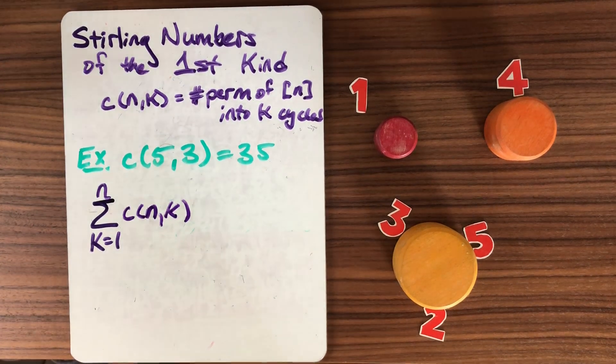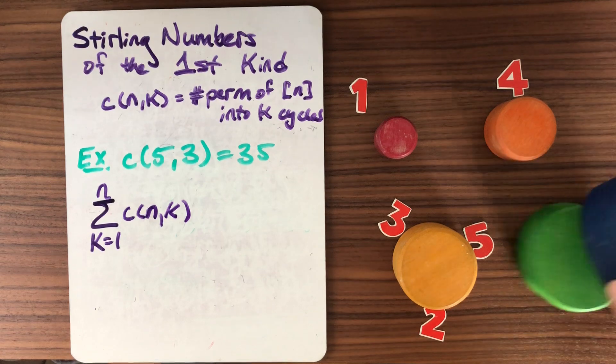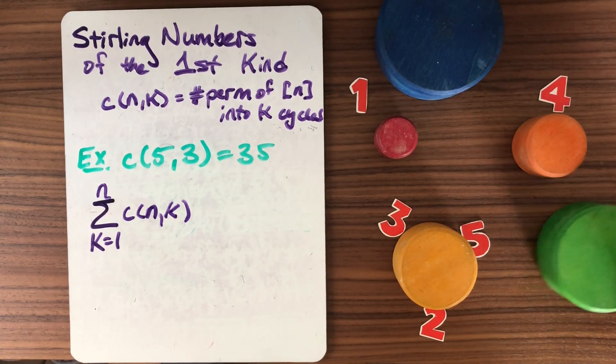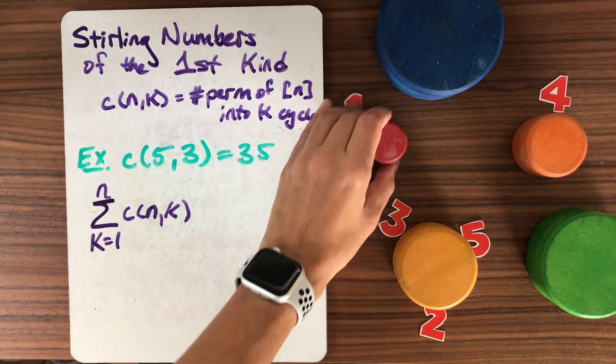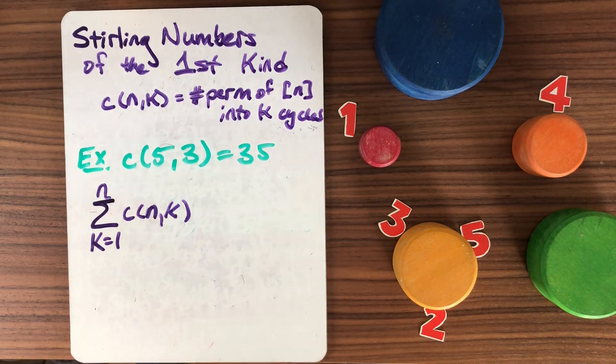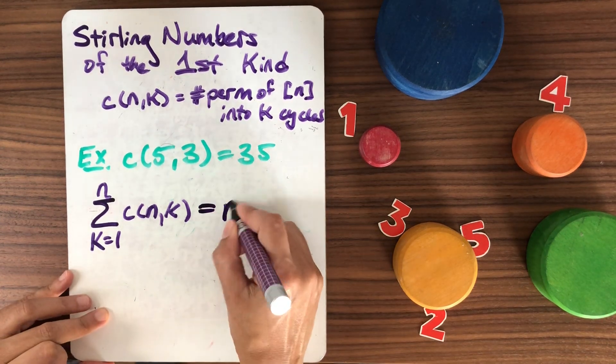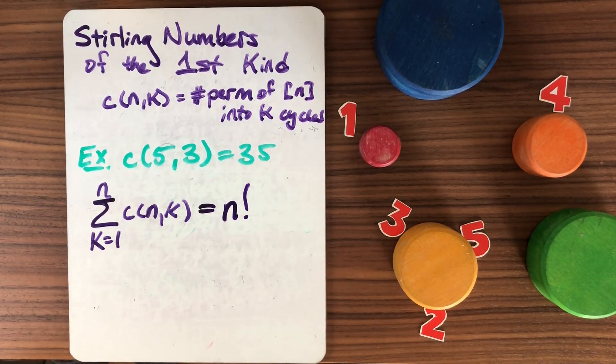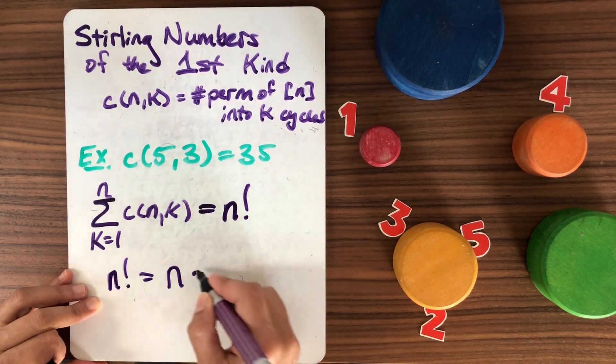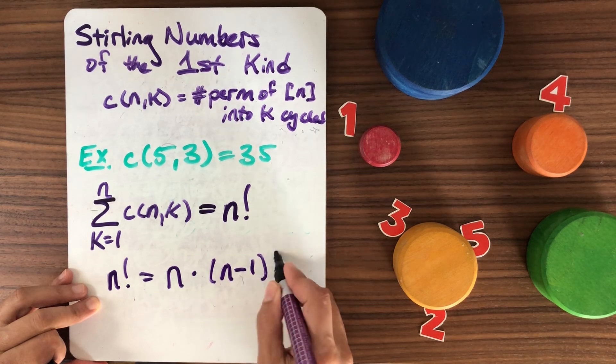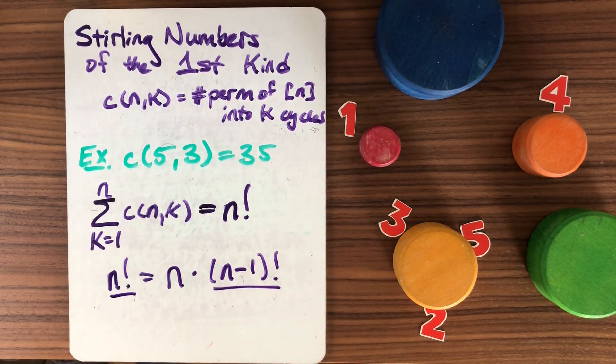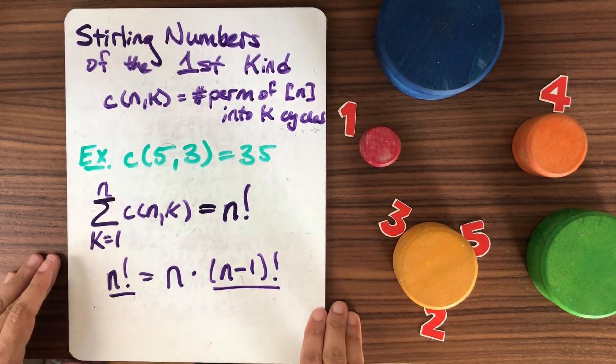What happens when we add all of these up? We can think of it combinatorially, we're just adding more tables. But now we can allow that some of the tables are empty. Give me any permutation, I don't mind how many cycles you have. So this is just n factorial. And there's a lovely recurrence relation for n factorial, which is that n! equals n times (n-1)!. And this holds for the Stirling numbers of the first kind.